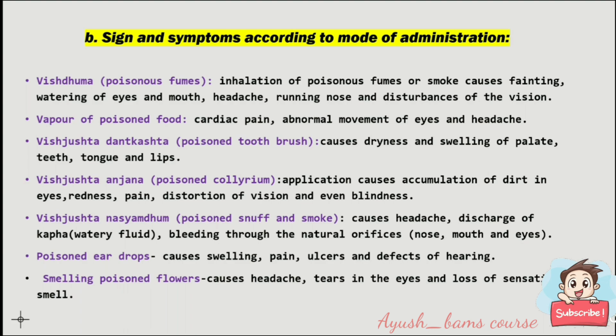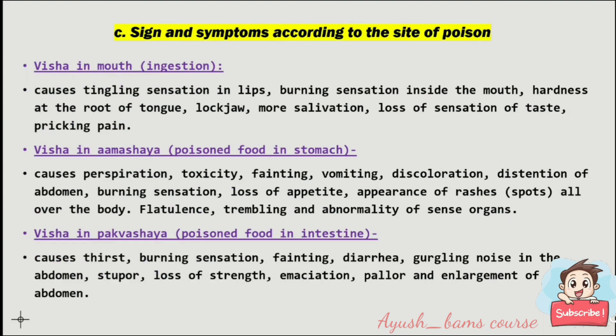Signs and symptoms according to mode of administration: inhalation of poison fumes or smoke causes fainting, watering of eyes and mouth, headache, runny nose, and disturbances of vision. Vapor of poisoned food causes cardiac pain, abnormal movement of eyes, and headache. Poisoned toothbrush causes dryness and swelling of palate, teeth, tongue, and lips. Poisoned collyrium (anjana) causes accumulation of dirt in the eyes, redness, pain, distortion of vision, and even blindness. Poisoned snuff and smoke cause headache, discharge of watery fluid, and bleeding through the natural orifices.